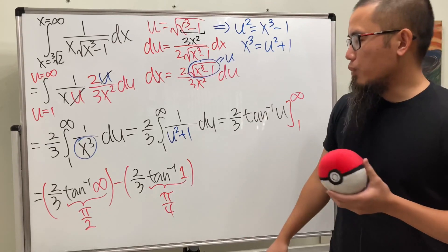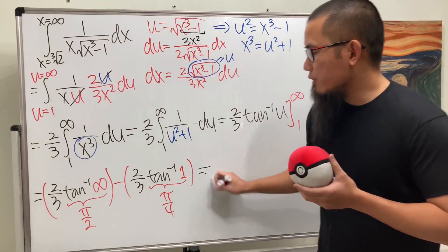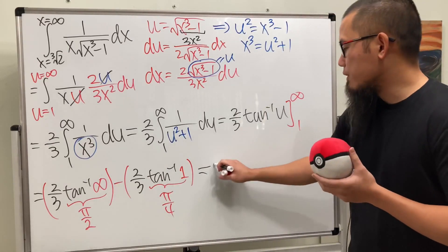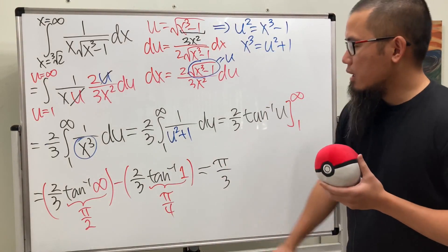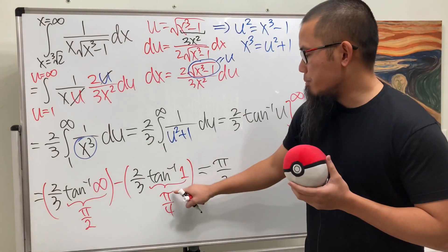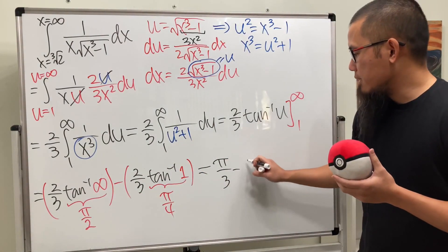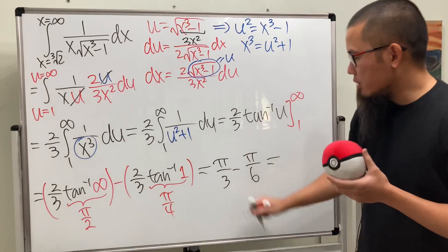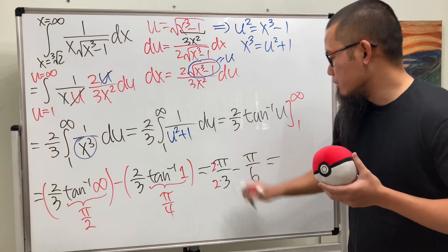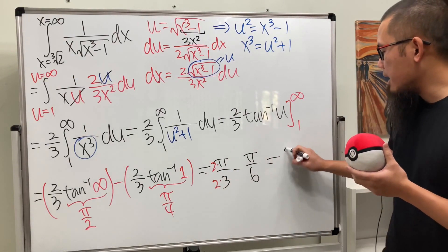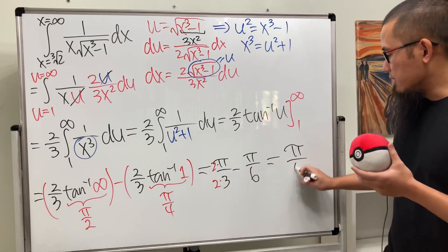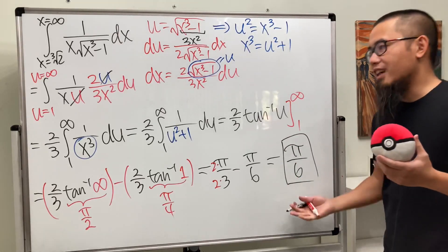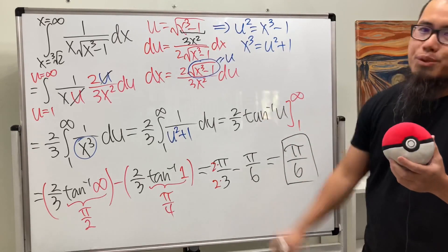Working out the fractions: the 2 in the numerator and denominator cancel for the first term, giving π/3. The second term reduces to π/6. So we have π/3 minus π/6. Getting a common denominator: 2π/6 - π/6 = π/6. And we are done — that's how you deal with this integral.